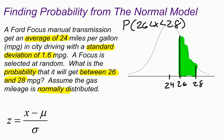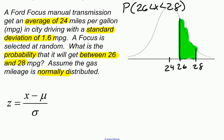All right, I have to change 26 and 28 into z-scores, and once I change them into z-scores, then I'll be able to use my calculator to find this green-shaded region.